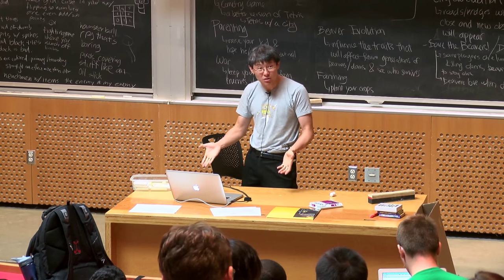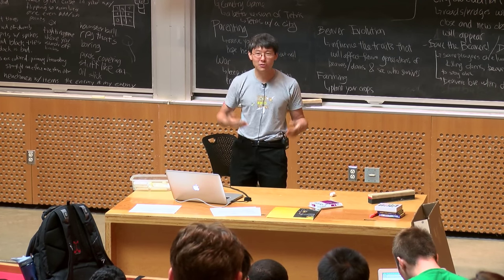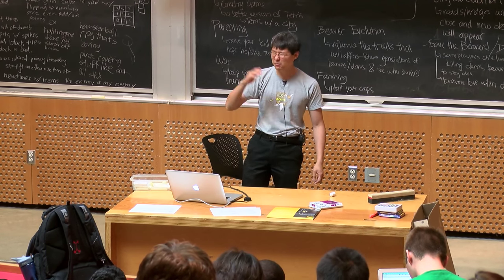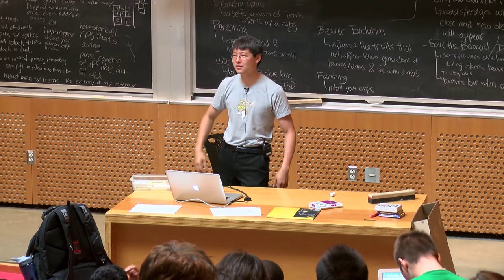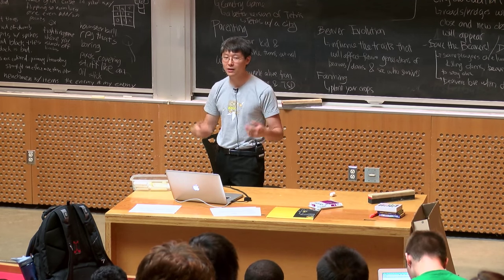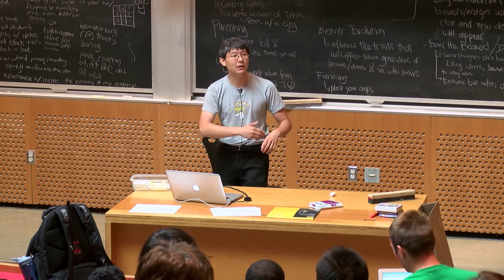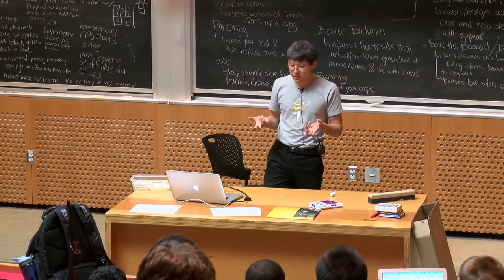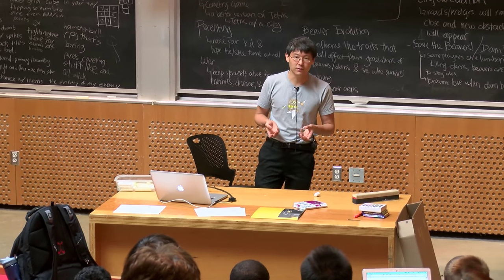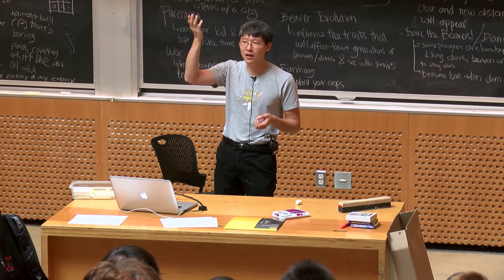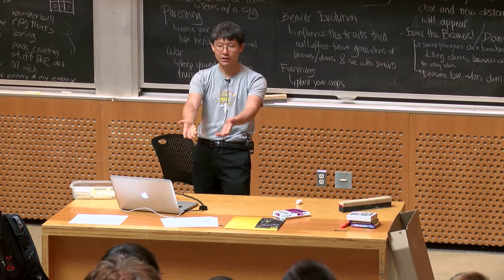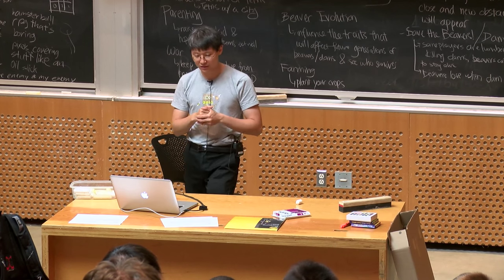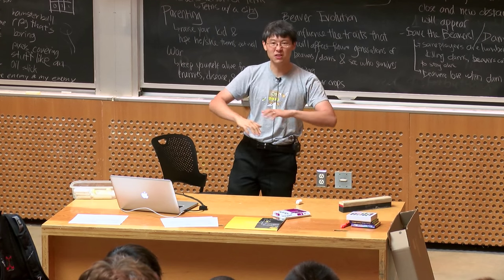Paper prototypes are very good at revealing usability problems — for instance, a player knows what they want to do but has no idea how to execute it: do I roll first and then move, or move first and roll? Players also tend to give more honest criticism when they see something clearly incomplete. If you've got a hand-drawn cardboard prototype in front of them, they know you're at the beginning. They'll tell you things like 'I really don't like how this character looks' — and that's fine, you spent two minutes drawing it.